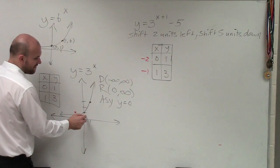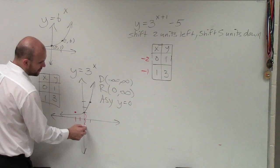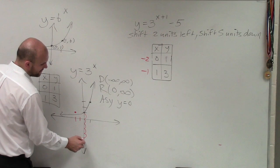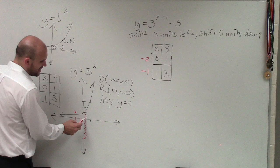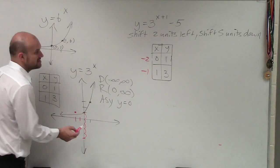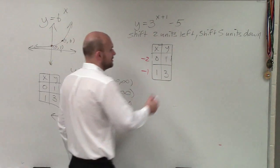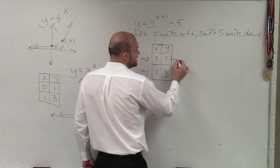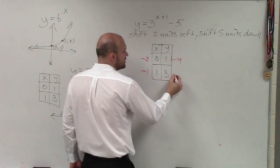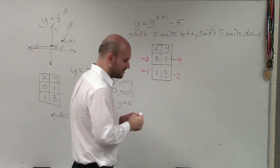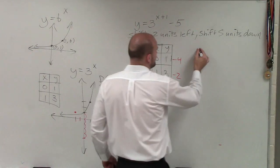Well, if I take 0, 1 and shift it five units down, that's 1, 2, 3, 4, 5. So now it's going to have a coordinate point of 0, negative 4. So all I'm really going to do then is subtract 5 from each of these points. So therefore, creating a new table of values.